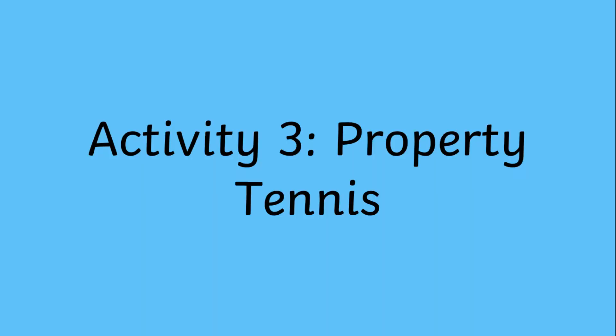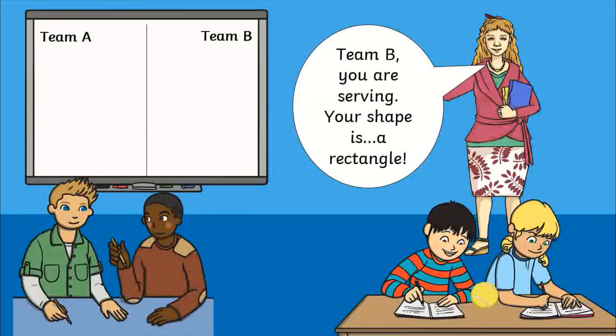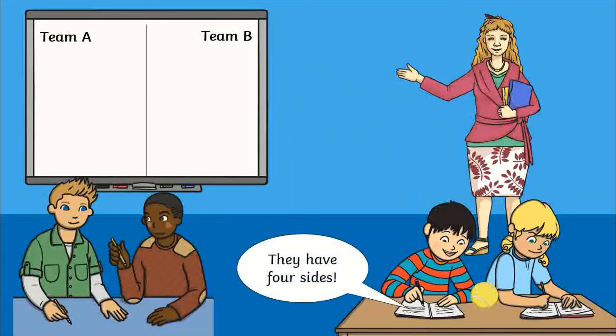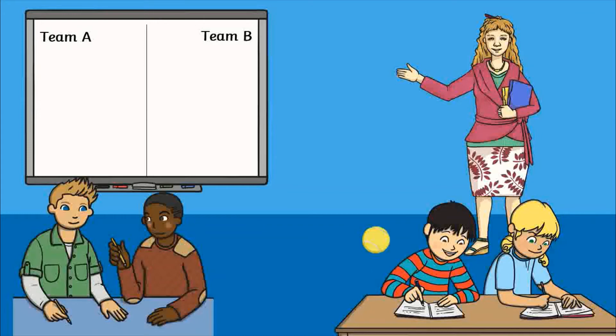As a final activity, you could play property tennis. A shape is chosen and one player or group serves. They take it in turns naming properties of the chosen shape. They could use their completed worksheets for support.